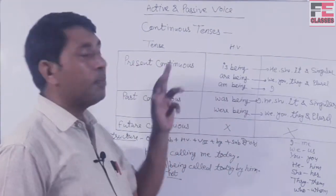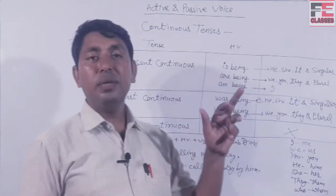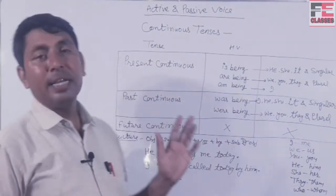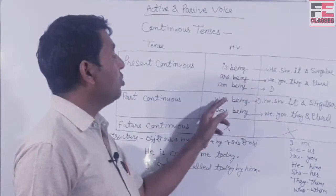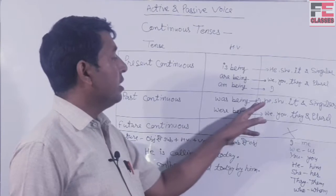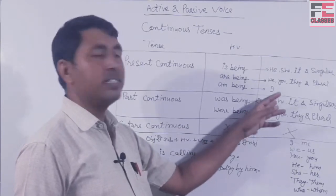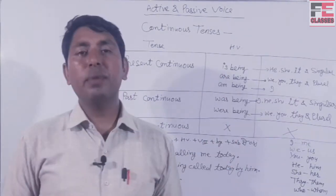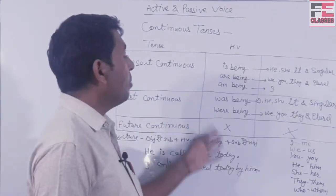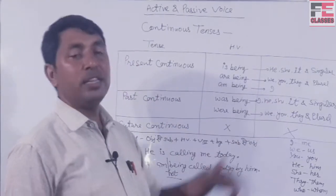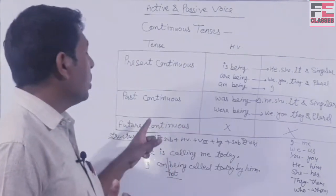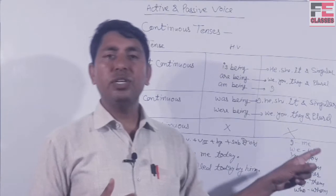उसके बाद आता है past continuous। इसकी passive की helping verb होती है 'was being' और 'were being'। यदि subject 'I', 'he', 'she' या कोई singular number का है तो उसके साथ was being का यूज़ करते हैं। यदि कोई plural number का है — we, you, या they — तो उसके साथ were being का यूज़ करते हैं।